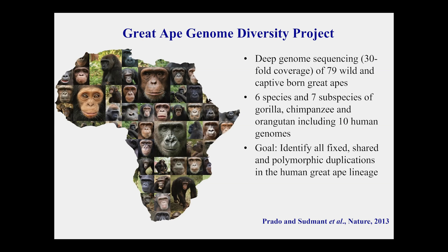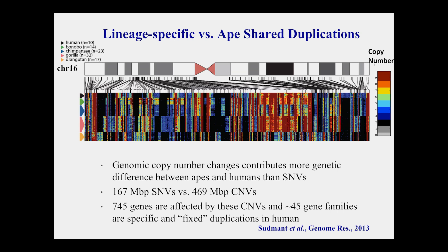The goal was straightforward: sequence the genomes of these individuals using short-read Illumina technology to identify all fixed, shared, and polymorphic duplications that had emerged on the different branches of the great apes, with a specific focus on duplications specific to the human lineage. Shown here is a color map of chromosome 16 highlighting duplicated sequences across different apes. Each row represents a different individual — 10 humans, 14 bonobos, chimpanzees in blue, 32 gorillas, and 17 orangutans.